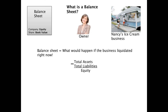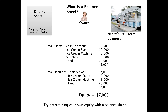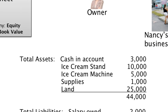Here I took a very generic balance sheet for Nancy's ice cream business. On the top you can see the total assets. The cash in the account: Nancy has $3,000 on hand. Her ice cream stand is worth $10,000. The ice cream machine inside is worth $5,000. The supplies she has on hand right now is $1,000. And the land she bought to put her ice cream stand on is $25,000. When we sum up those assets, it's $44,000.